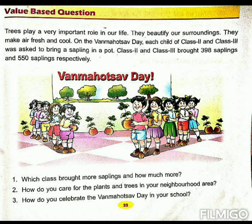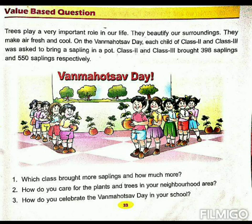Let's read the first question: which class brought more saplings and how much more? Class 2 brought 398 saplings and class 3 brought 550 saplings. So class 3 brought more saplings. And how much more? When you have to find how much more, you have to subtract class 2 saplings from class 3 saplings and you will get the answer.